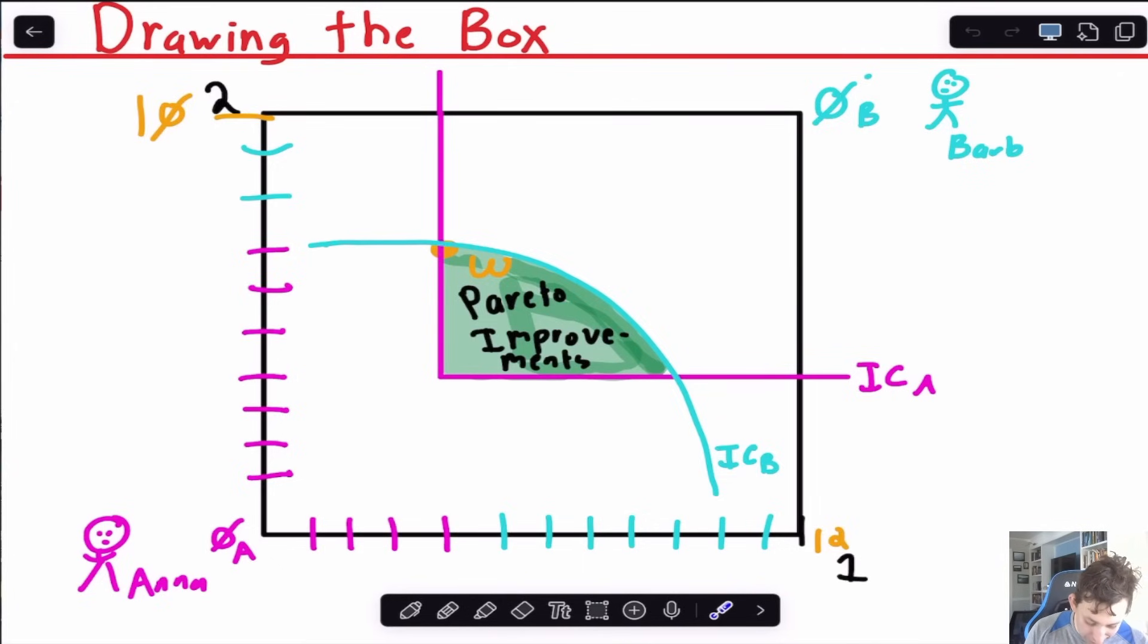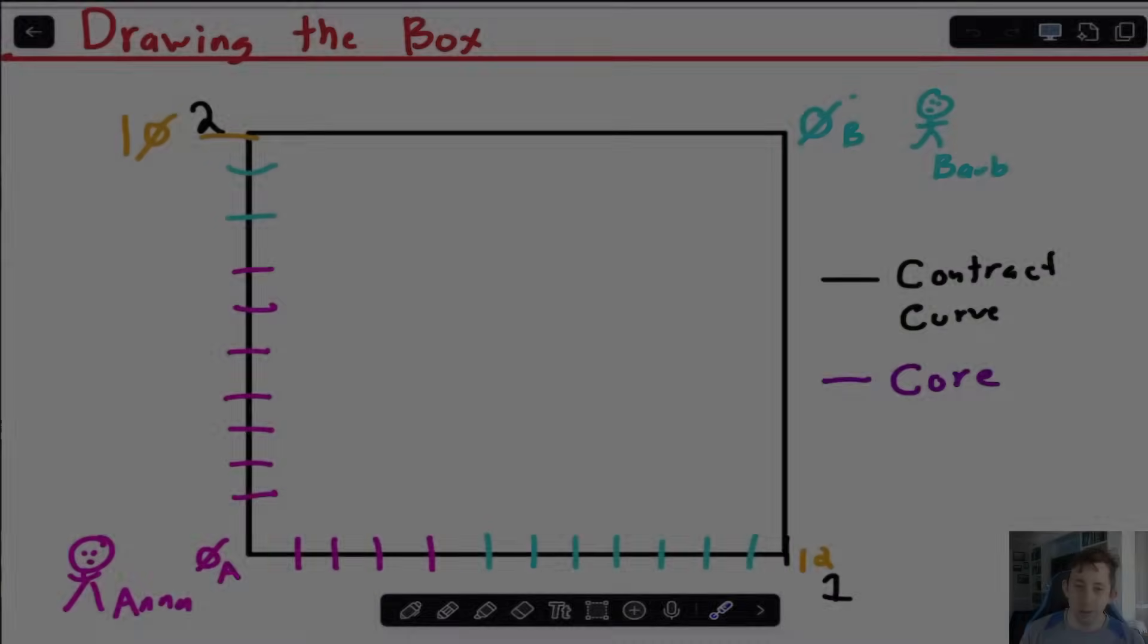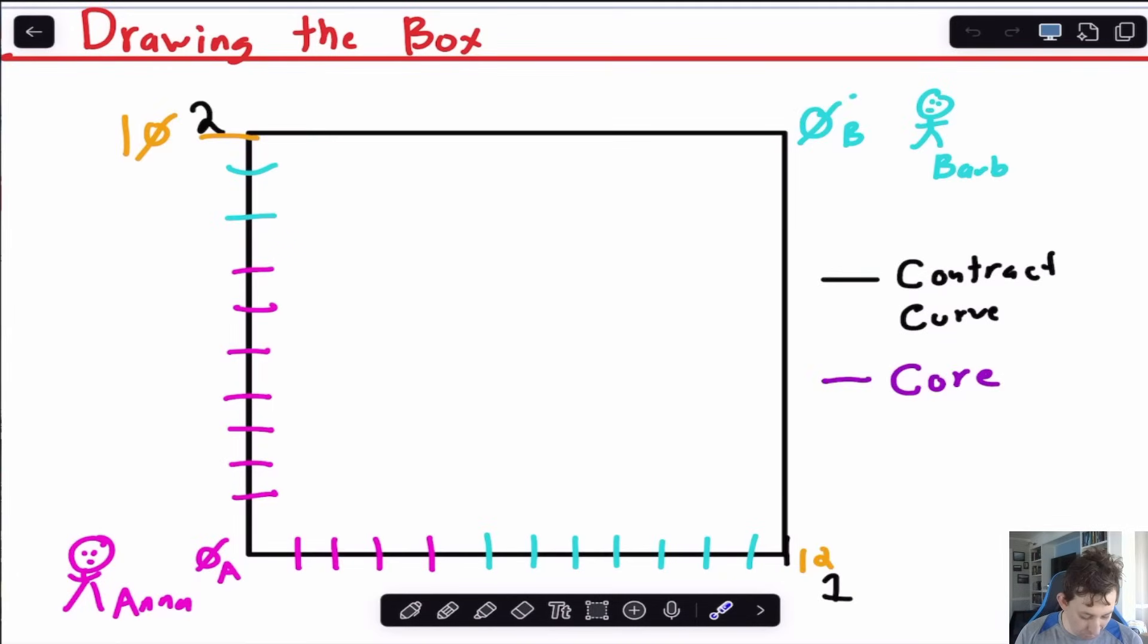Person A, or Anna, she has perfect complements, so we know that looks like that L-shaped indifference curve. Through the endowment, if she's got 4 and 8, that point is 4 and 4, and the indifference curve for Barb is just convex. It's a Cobb Douglas utility, drawn upside down, so it's going to look like this. The Pareto improvements are places in which both people are at least as well off as when they started and one person's better off. That's this shaded area here in green. Now that I've shown you the pretty picture, let's go through it together.